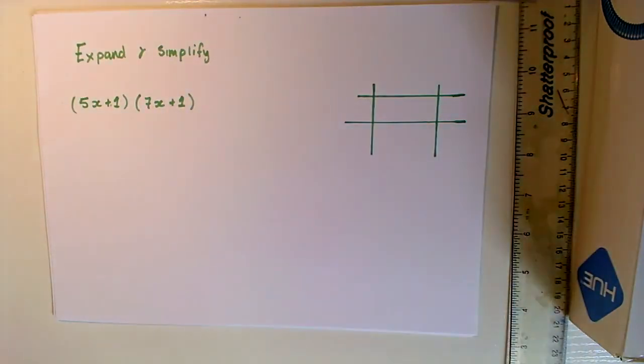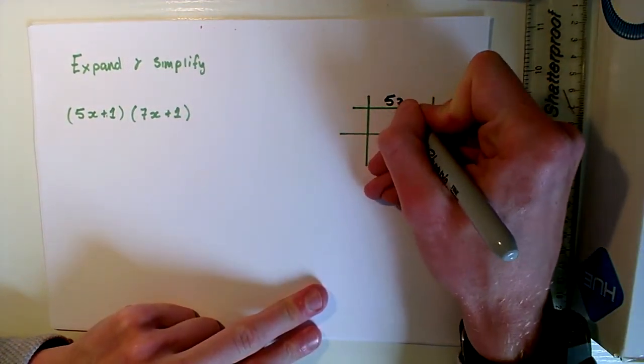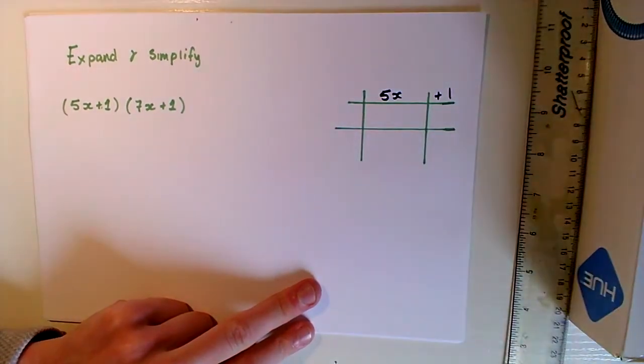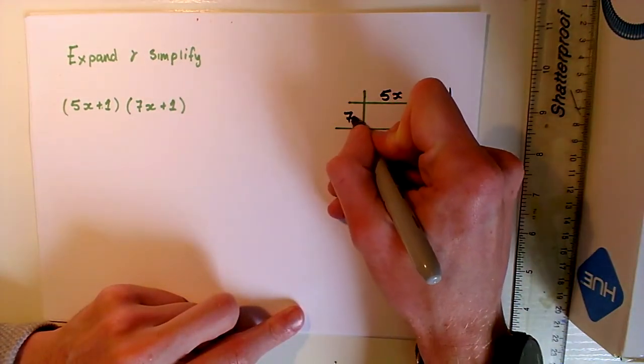Here we have an algebraic binomial expansion question. They're asking us to multiply 5X plus 1 by 7X plus 1. I will solve this question using the two most common solutions. The first one I'm going to use is called the array method and it uses this box over here. What we need to do is take our first bracket, which is 5X plus 1, and we're going to write that along the top. Then we take our second bracket, which is 7X plus 1, and we are going to write that vertically.